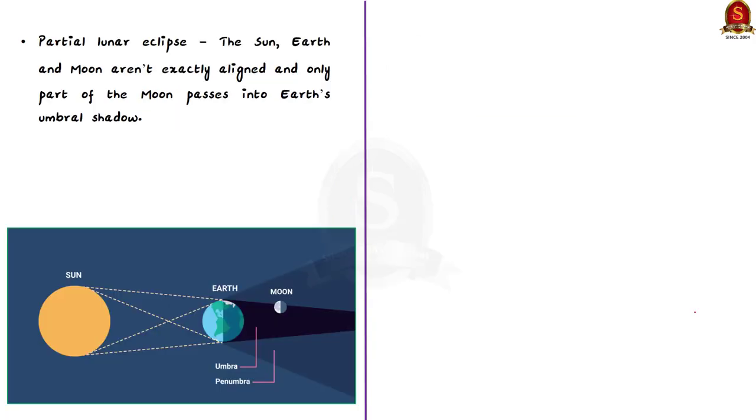Then there is the partial lunar eclipse. It occurs when the sun, earth and moon aren't exactly aligned. So only part of the moon passes into earth's umbral shadow.